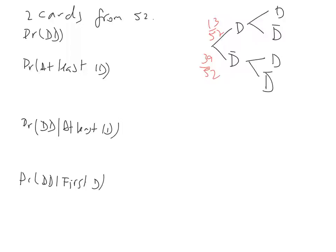We're not putting these cards back. So we've got 13 out of 52 for one diamond. For another diamond, it becomes 12 over 51. And over here, for a not diamond, we've still got 39 not diamonds left, but now we've only got 51 cards to choose from. So if the first card has been a not diamond, then for a diamond we've still got 13, but it's now out of 51. And for a not diamond, it is 38 out of 51.